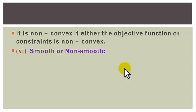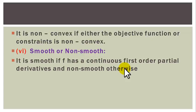Six: the optimization problem can also be classified as smooth or non-smooth. It is smooth if F has continuous first-order partial derivatives, and it is non-smooth otherwise.